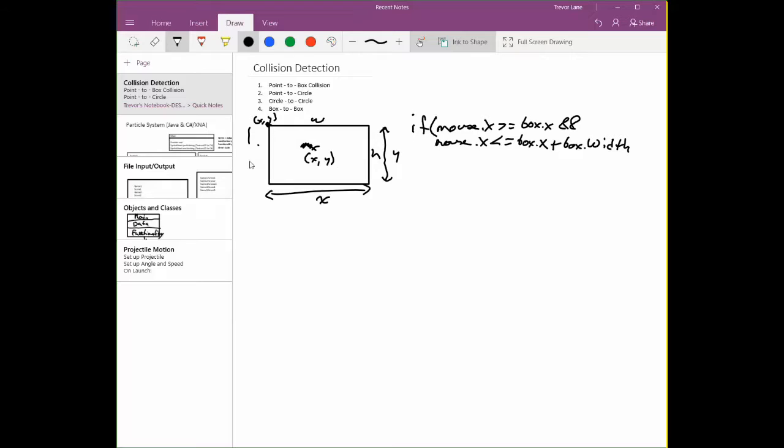So if the mouse x is greater than the left side and less than the right side, you're inside the two left and right walls. Good.